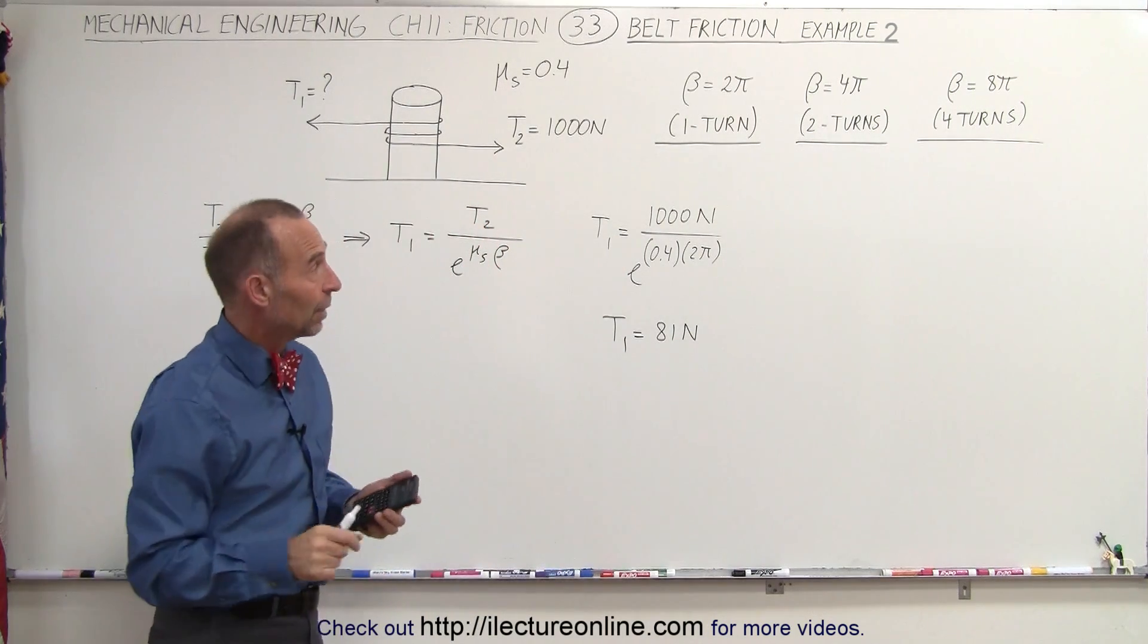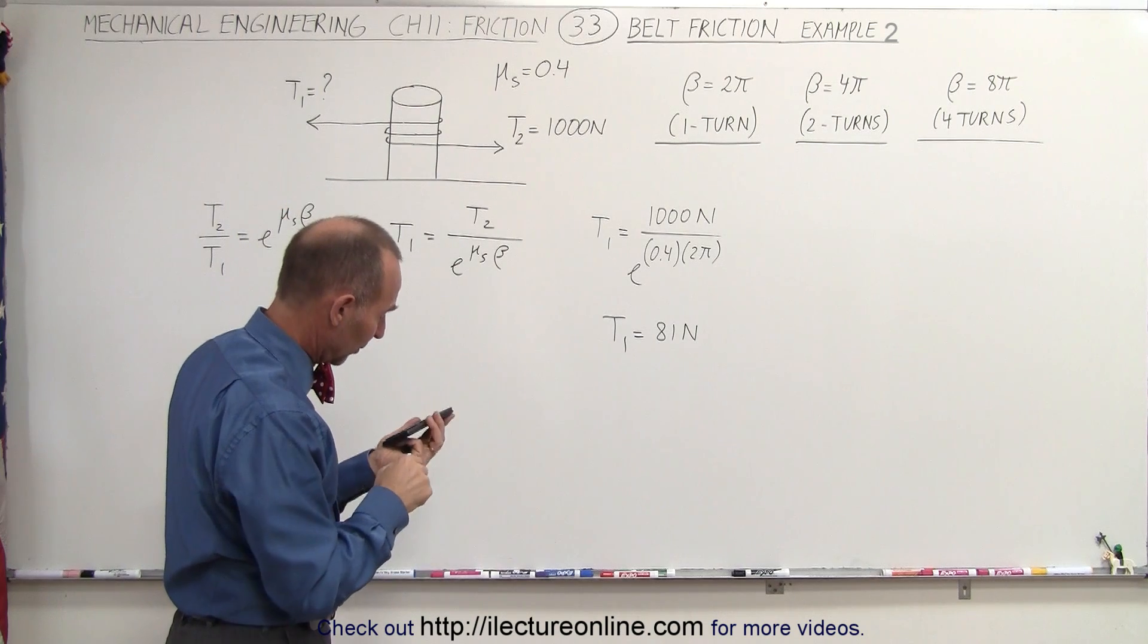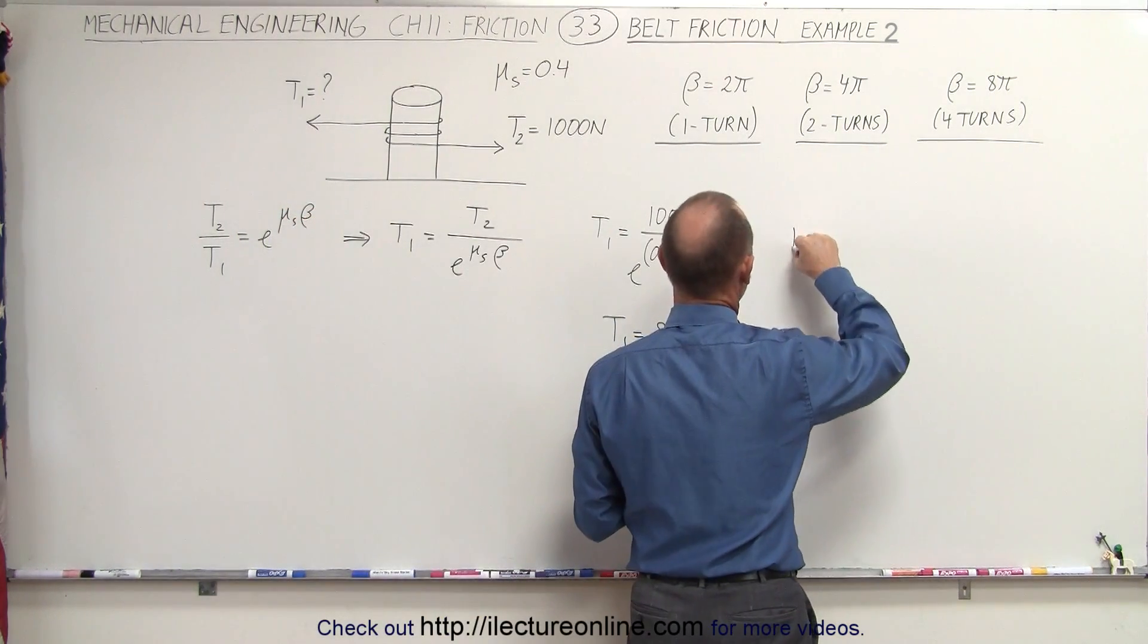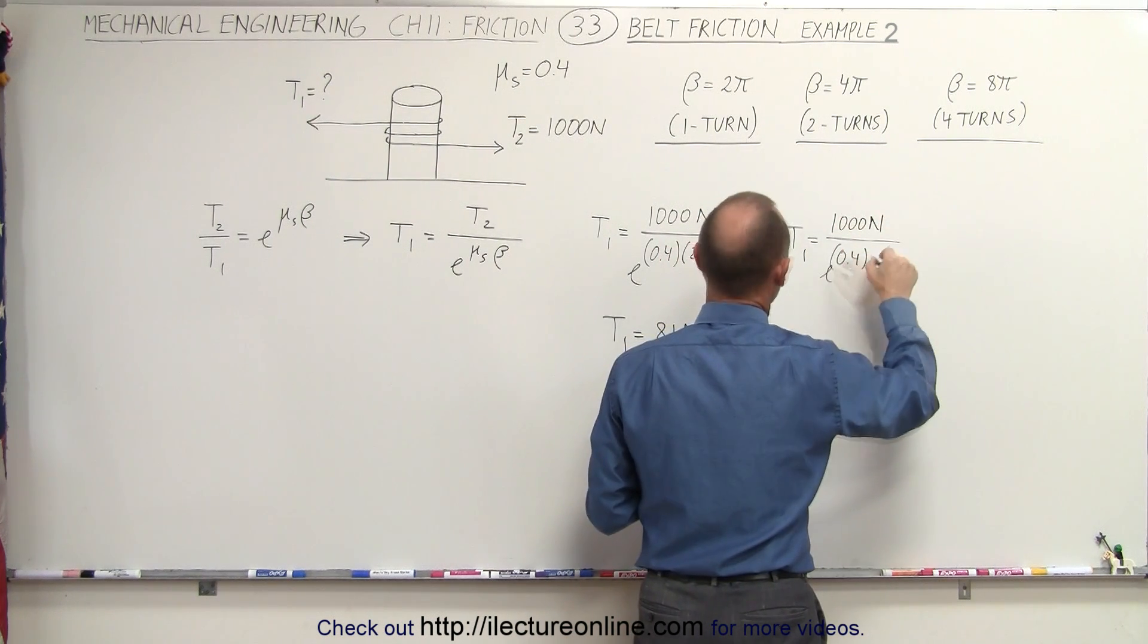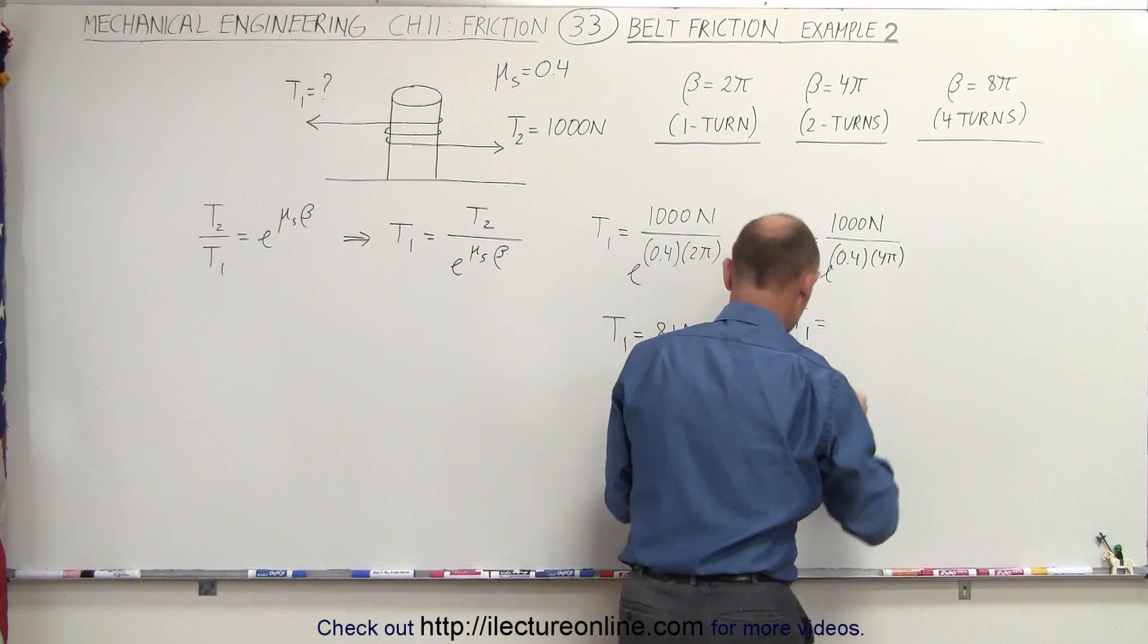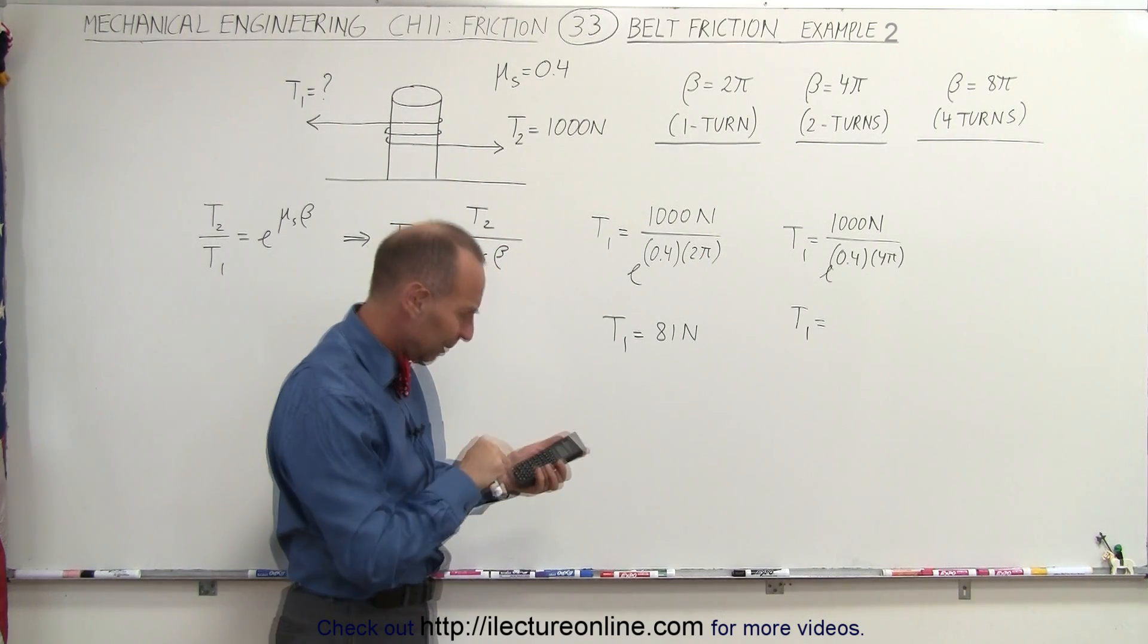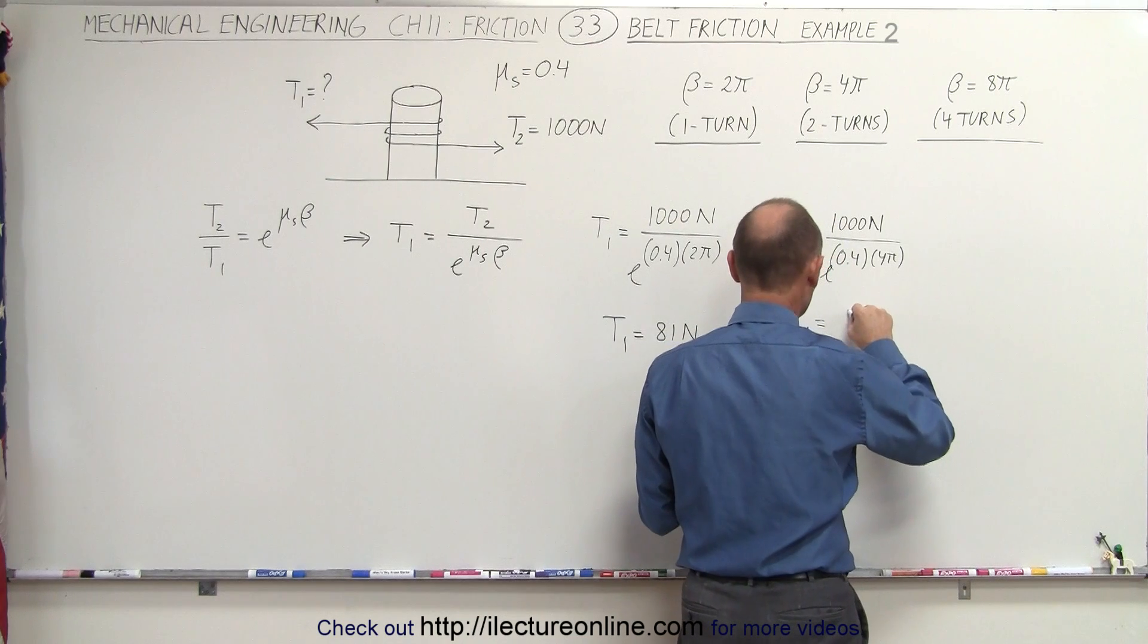What we're going to do now is do it again, but now we take two turns around the post and see what happens. So that gives us T1 is equal to 1,000 newtons, 0.4 times 4 pi. We take 0.4 times 4 times pi, and it gives us 6.56 newtons.